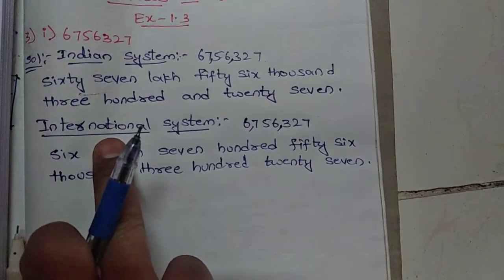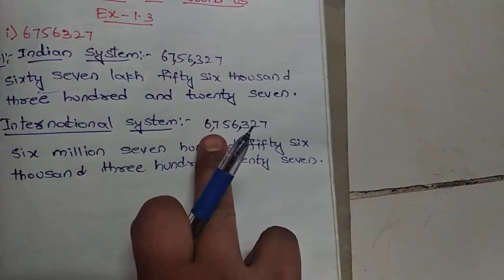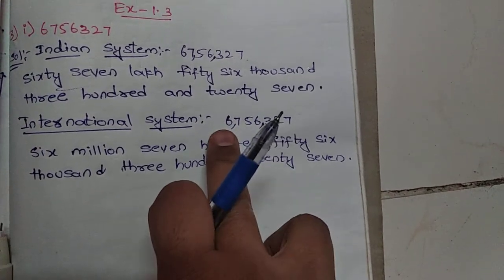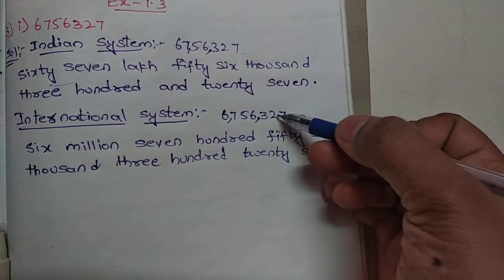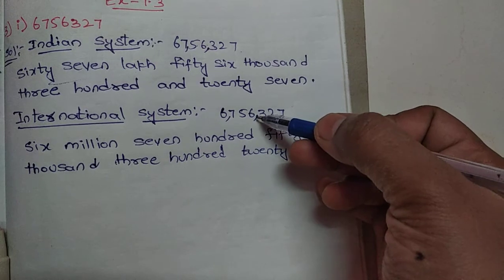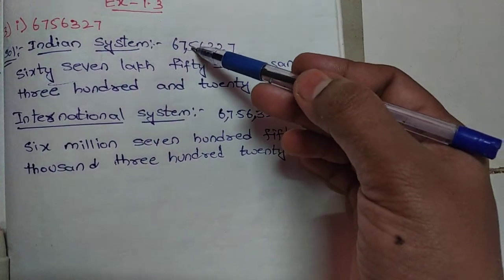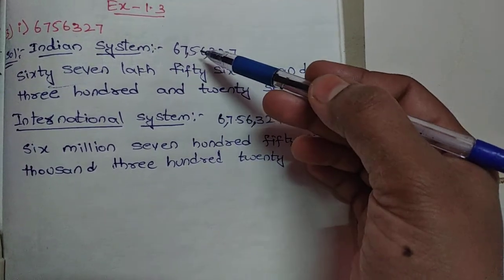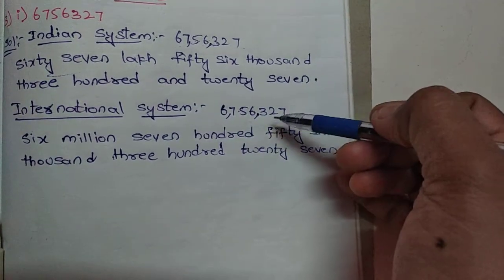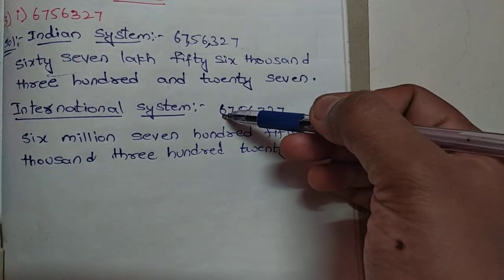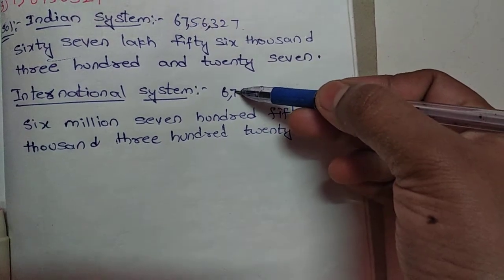Next, the International system — same number. In the International system, each period has three place values. Starting from the right side: one, two, three — place a comma; next three place values — one, two, three — place a comma again. So the periods are: units period, thousands period, and millions period.